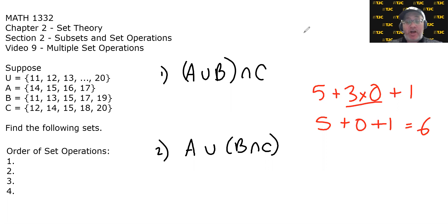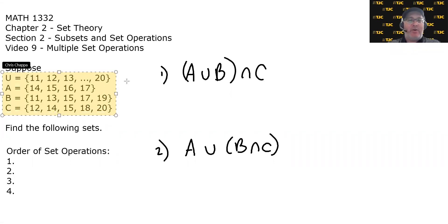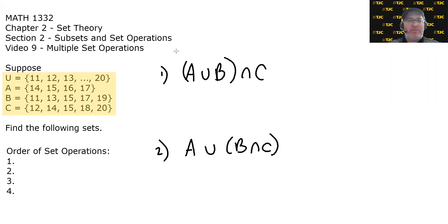The same thing happens with multiple set operations — there is a specific order in which to evaluate a set expression. In these examples, we have the following sets: the universe contains the whole numbers from 11 through 20; set A contains 14 through 17; set B contains the odd numbers in the universe; and set C is a random collection: 12, 14, 15, 18, and 20.